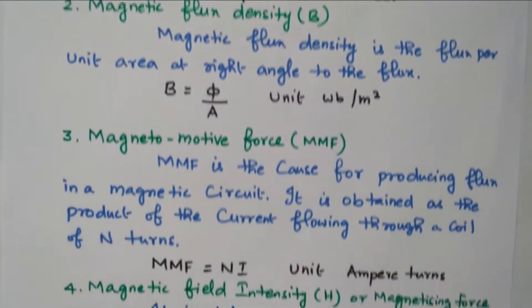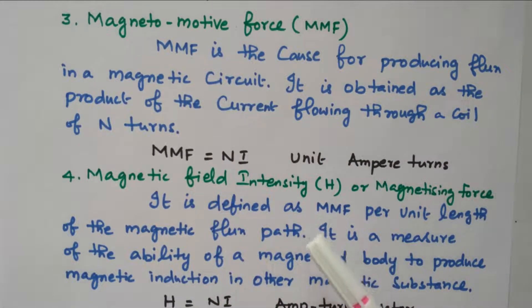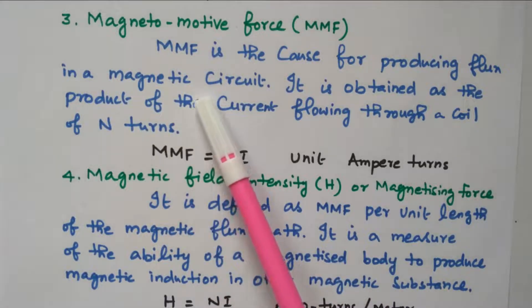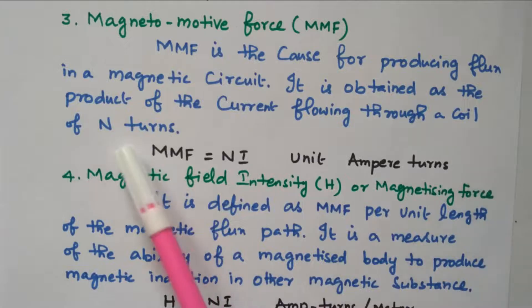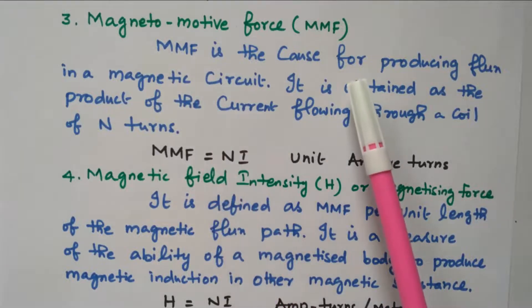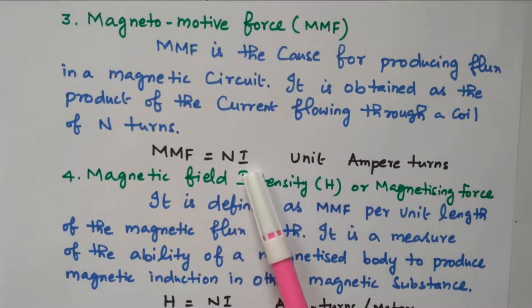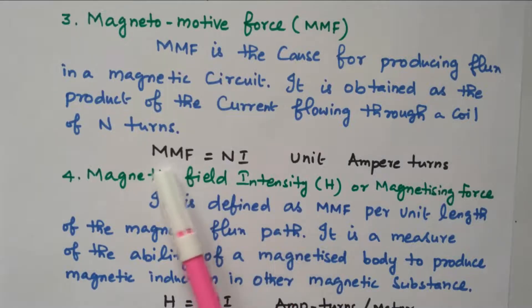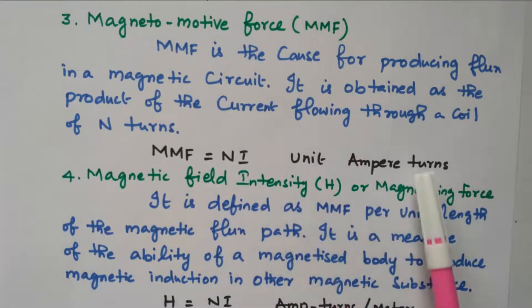Next we will go to magnetomotive force, or MMF. MMF is the cause for producing flux in the magnetic circuit — it is the source for producing magnetic flux. MMF is obtained as the product of the current flowing through the coil and the number of turns: MMF = N × I. The number of turns and the current determine the magnetomotive force. The unit is ampere-turns.